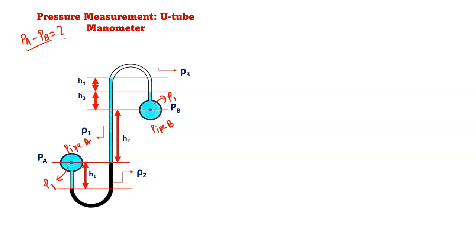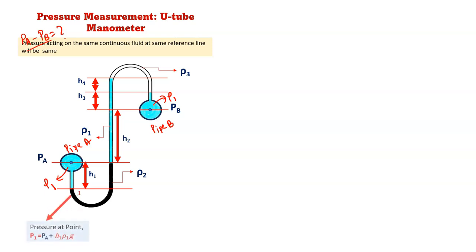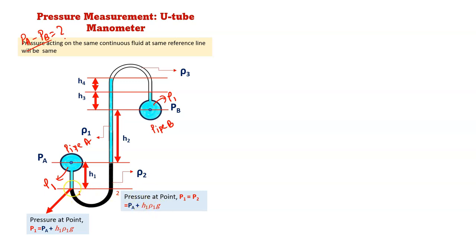First, we know that pressure acting on the same continuous fluid at the same reference line will be the same. So here I am drawing a horizontal reference line. The pressure at point 1, P_1, is nothing but P_A plus H_1·ρ_1·G. Now, P_1 is equal to P_2, because pressure acting on the same continuous fluid at the same reference line is the same. So P_2 equals P_A plus H_1·ρ_1·G.